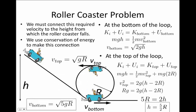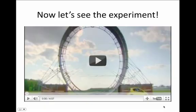So to recap, when you start from a certain height h, the critical criteria for whether or not you're going to make it around a loop-the-loop is that the velocity at the bottom has to equal √5gR or more, and the velocity at the top has to equal √gR or more. Now let's actually see the experiment.